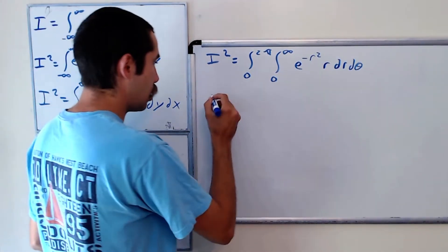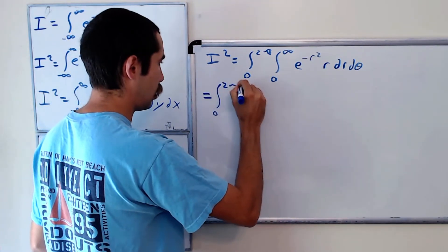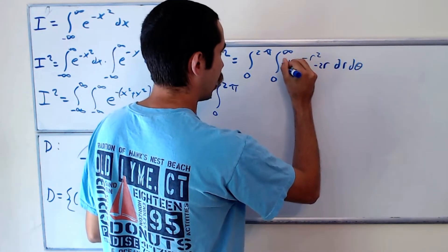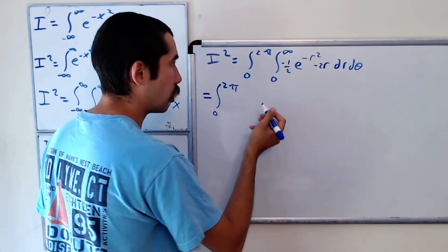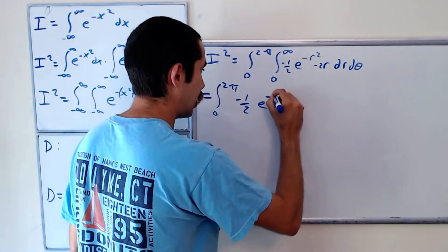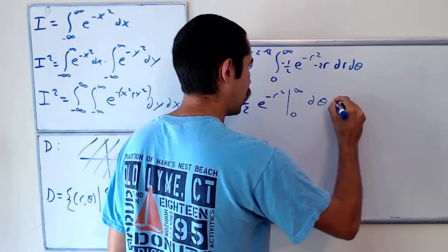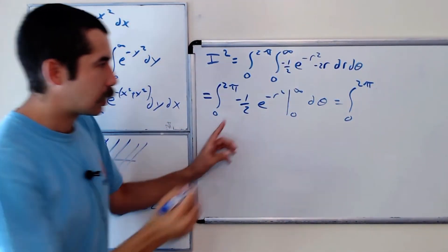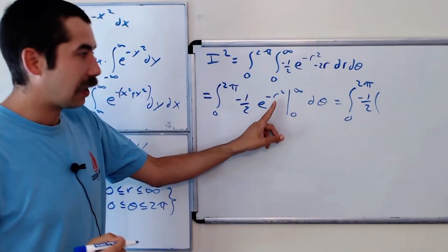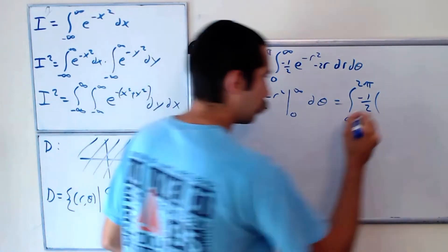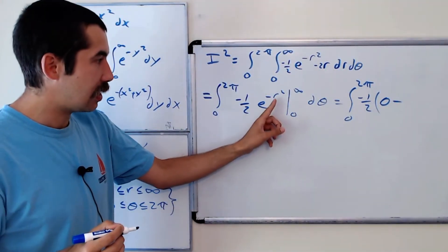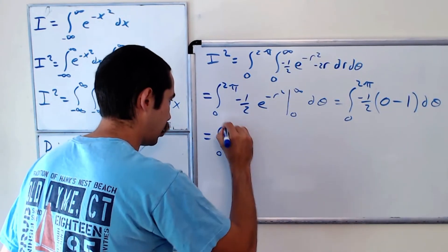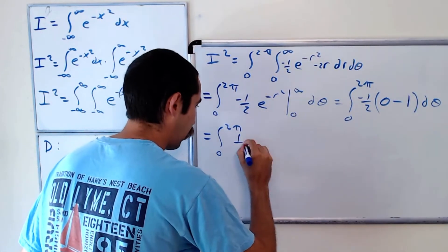Now we'll start by integrating with respect to r. I squared equals the integral from zero to two pi. To integrate with respect to r, we use u-substitution: we need a negative two here, so we bring a negative one half in front. This gives us negative one half e to the negative r squared, evaluated from zero to infinity, d theta. Which is the integral from zero to two pi — keeping the negative one half out front — and when we evaluate at infinity, e to the negative infinity is zero, minus e to the negative zero which is one. So this equals the integral from zero to two pi of positive one half d theta.